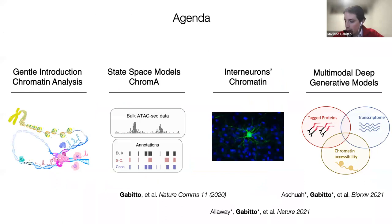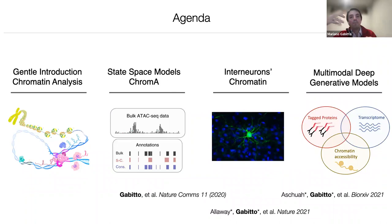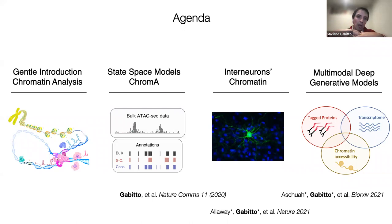I'm wrapping up by reiterating what I've shown: a set of algorithms that start by describing the chromatin landscape at the aggregated population level, then use single-cell information to create low-dimensional representations integrating both chromatin and transcriptional information. Along the way, I've shown a little bit about interneuron development and how we can identify early indications of cell fate commitment.